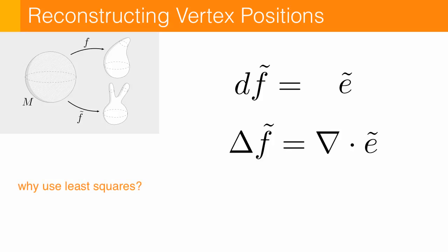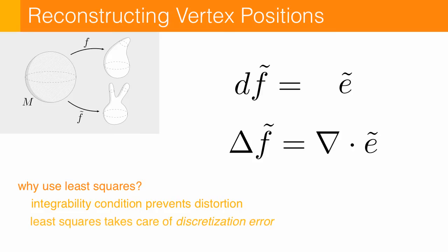Now at this point, you might object and say, why are you using a least squares problem? Didn't you say earlier that least squares was going to distort our surface? Well, because we have this integrability condition to prevent conformal distortion, least squares is just taking care of any remaining discretization error.